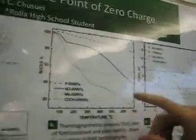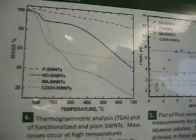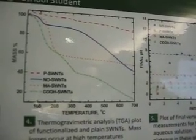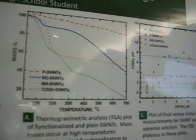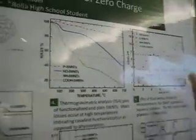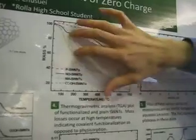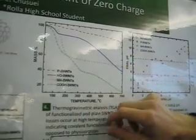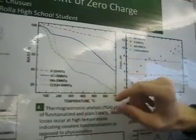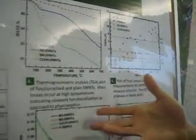Thermogravimetric analysis was run to make sure that we have covalent functionalization as opposed to physisorption. We need covalent functionalization to make a direct correlation between the electron-withdrawing character and the point of zero charge. What we see is that at relatively high temperatures, we have significant mass losses among the nanotubes, which indicates functional groups being lost at those temperatures. This means it requires high energy to remove these groups, and therefore they must be covalently bound to the surface as opposed to physisorption.